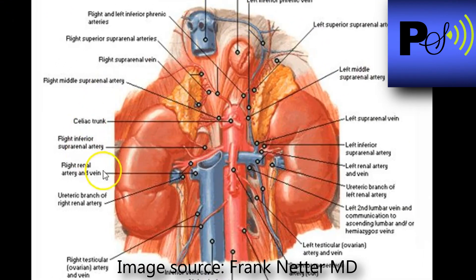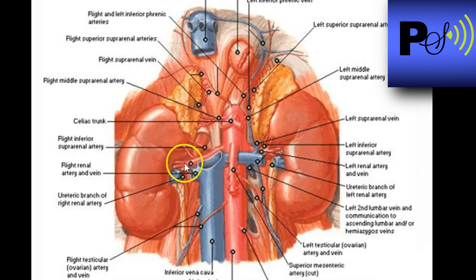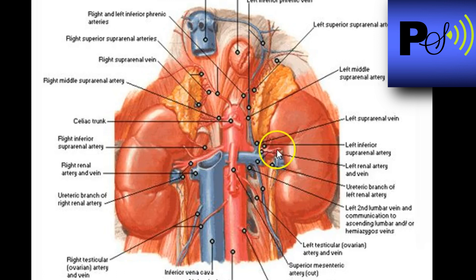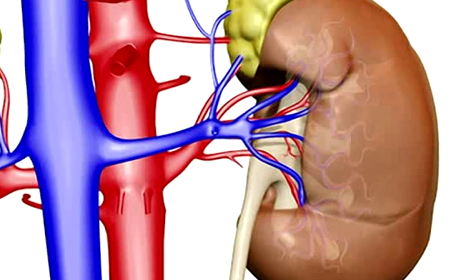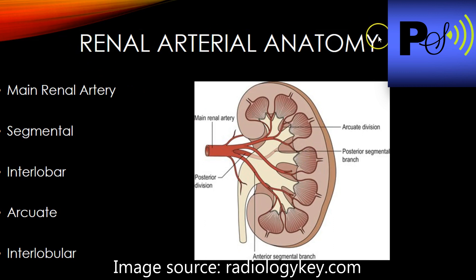Here's a diagram of the anatomy. You have your IVC — the liver is not in this image. Posterior to the IVC is the right renal artery. Here's the aorta and the superior mesenteric artery. The right renal artery is longer than the left renal artery, as you can see, because the aorta is to the left of the body — so there's a short distance between the aorta and the left kidney.